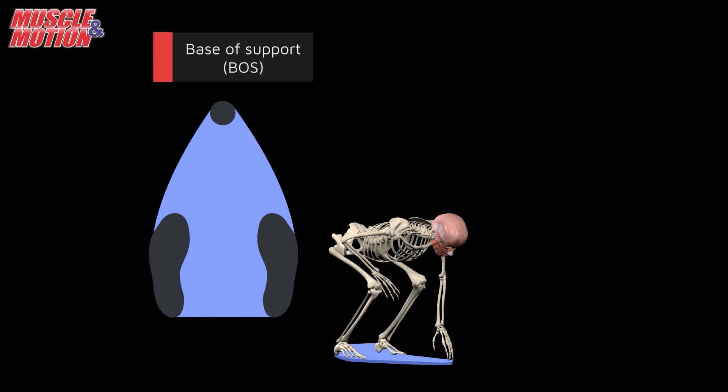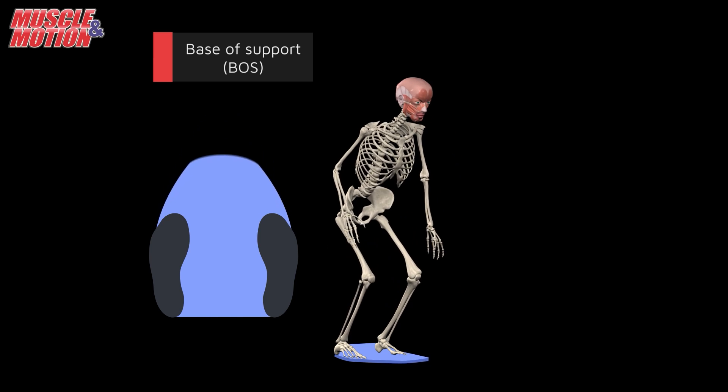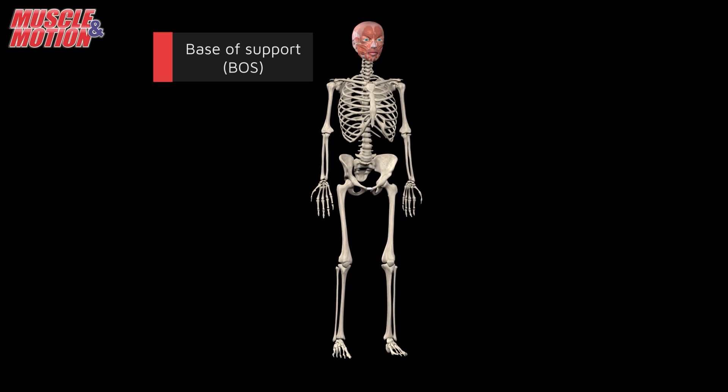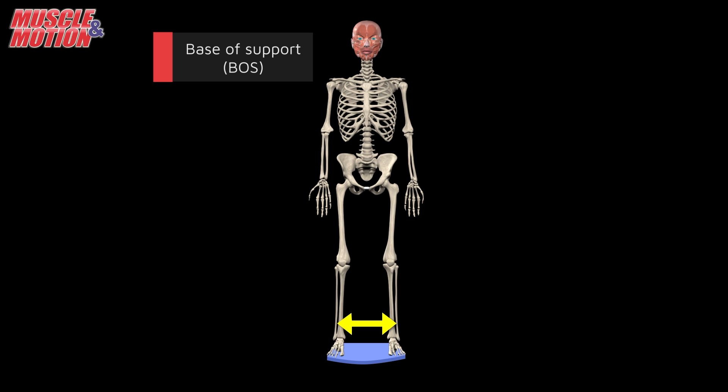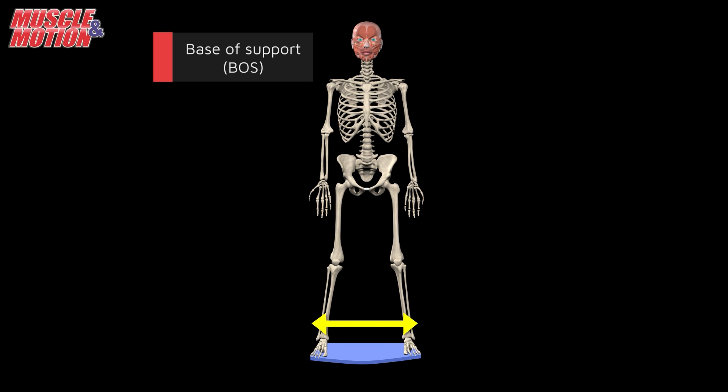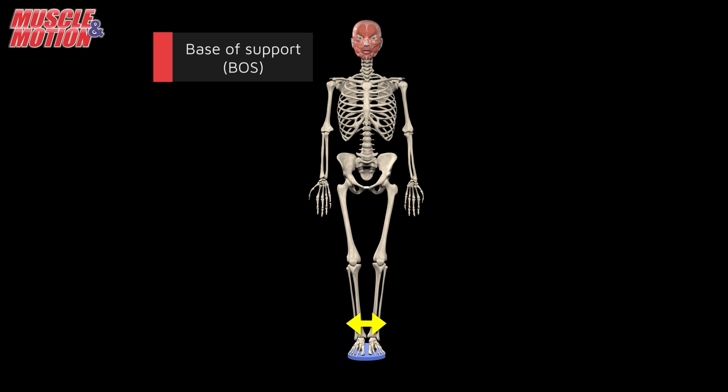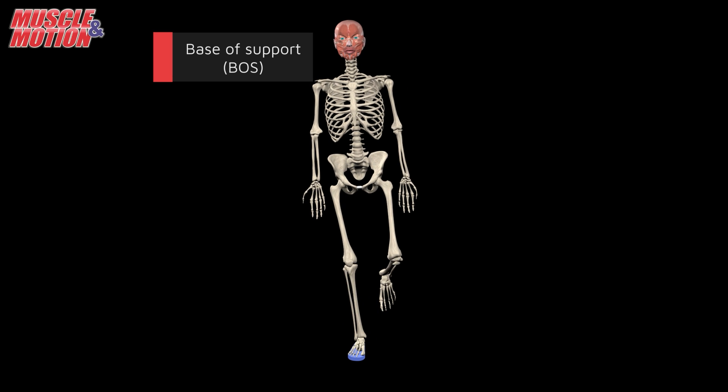For example, the wider the stance when standing, the larger the base of support becomes, whereas a narrow stance reduces the size of the base of support. This is why it's challenging to maintain weight distribution when standing with feet close together, as it requires keeping the center of gravity on a small support base.